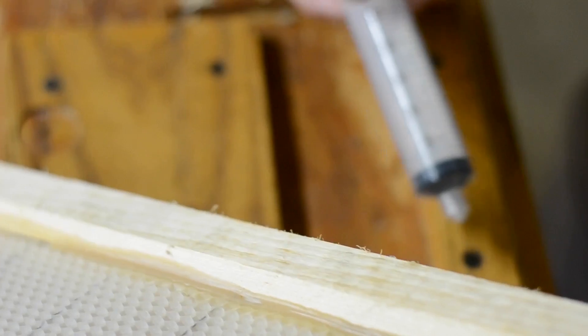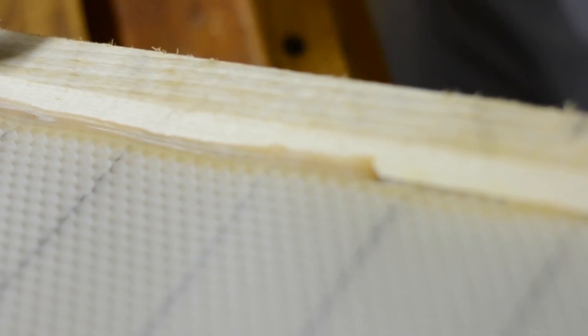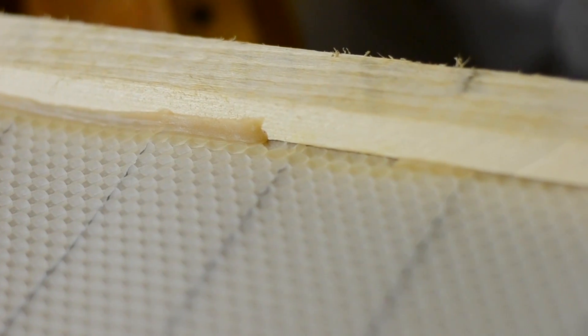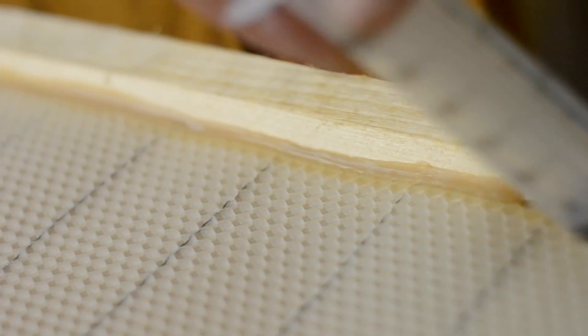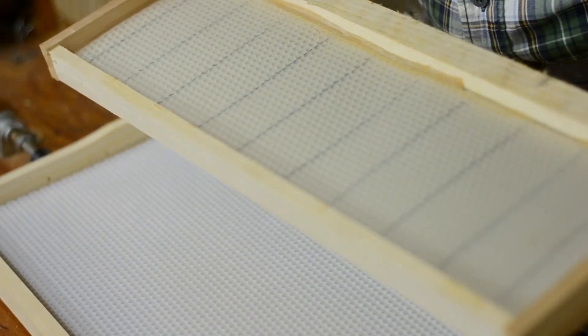So you pull it up just a little bit and then you hold it in position and you run a bead of liquid wax using a syringe. So this one's already done but what we would do is draw the wax up with a syringe and then just run a bead along there. Let that wax solidify and then it's welded into place.